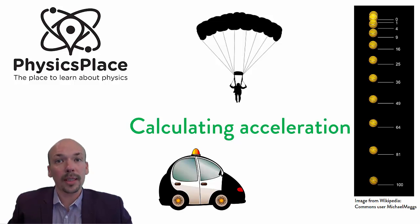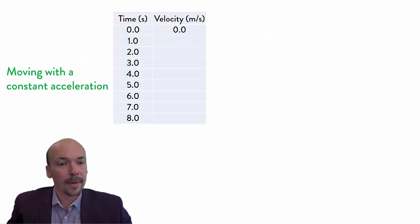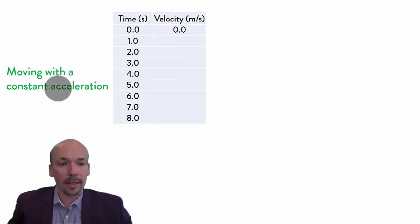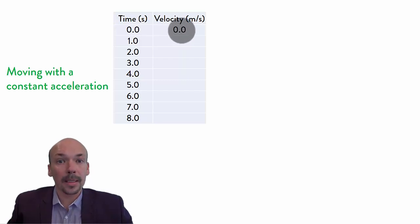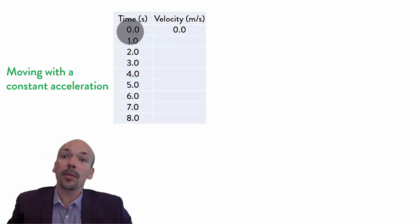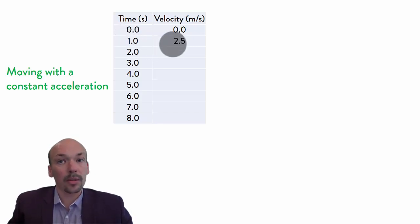I will first explain what acceleration actually is. So if we have a movement, which will be given here in this graph, with a constant acceleration, and it starts with a velocity of 0 meters per second at the beginning, so at time 0.0, and it will accelerate, then it could have a velocity after 1 second of, for instance,